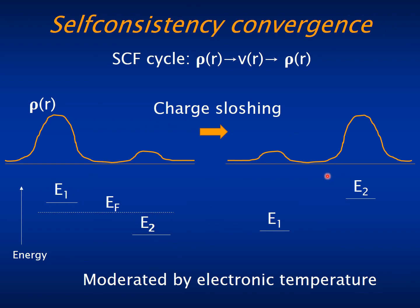Then in the next iteration, the charge will go from one system to the other. And of course, in the following iteration this will repeat and you will get a divergence of this process instead of convergence.